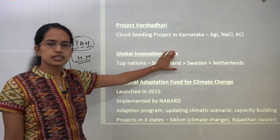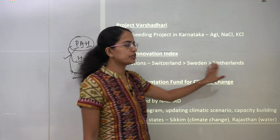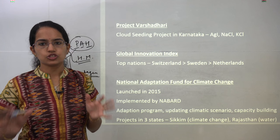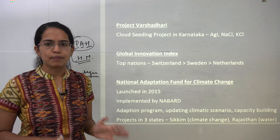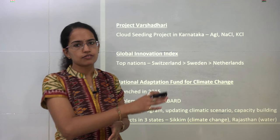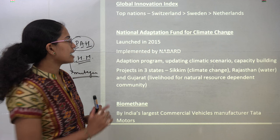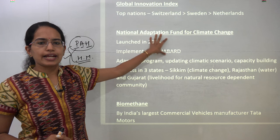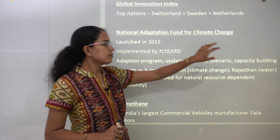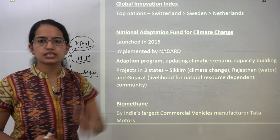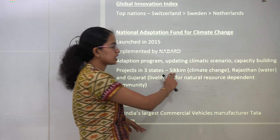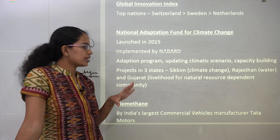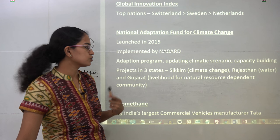Under the Global Innovation Index, the top performing nations are Switzerland, followed by Sweden and Netherlands — a direct ranking question may be asked. Solar panels being installed in India: the highest installed capacity is in Andhra Pradesh, followed by Gujarat, then Karnataka. The National Adaptation Fund for Climate Change was launched in 2015 and is implemented by NABARD. The three states worked around are Sikkim for climate change, Rajasthan for water conservation, and Gujarat for natural-dependent communities in the Kutch area.